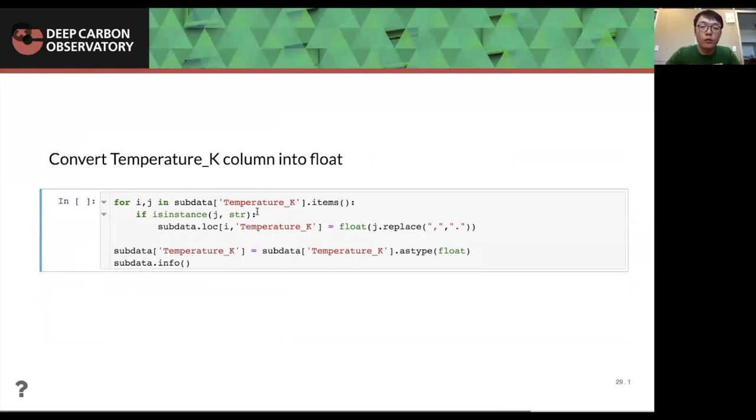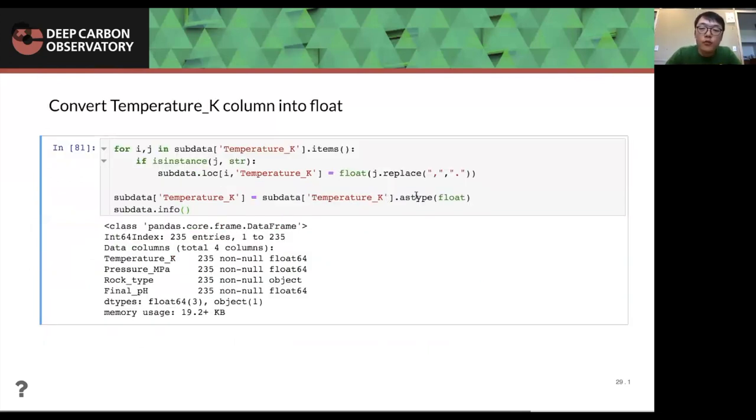And after that, I will, this is after doing that, I will transform this column into float column so that the temperature K will be transformed into float number. And now if we see the info of the sub data, we can see that temperature is float and the pressure is float. Final pH doesn't have missing value anymore. And this dataset is basically clean.